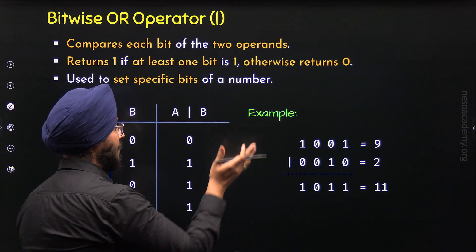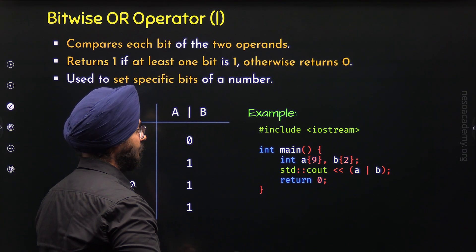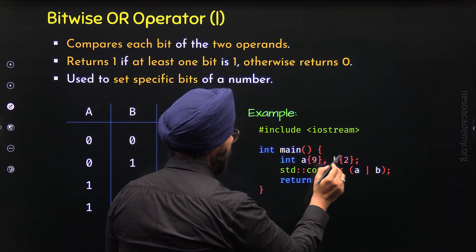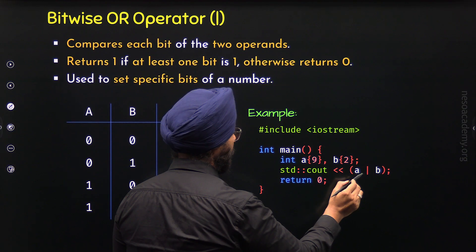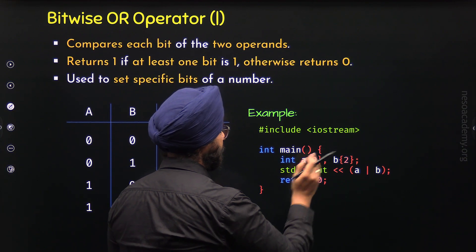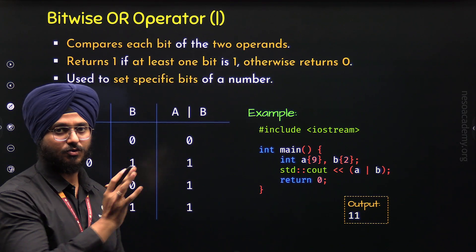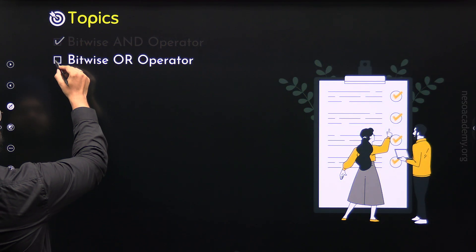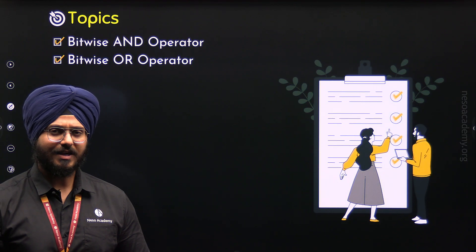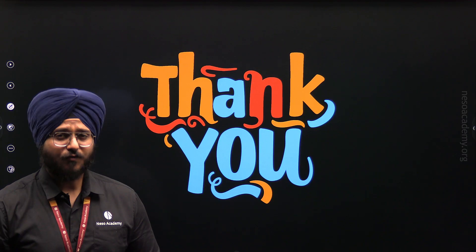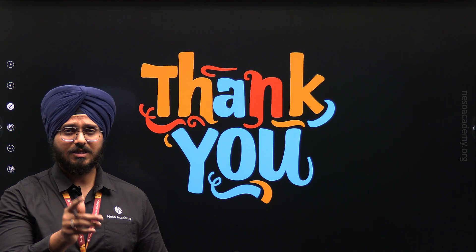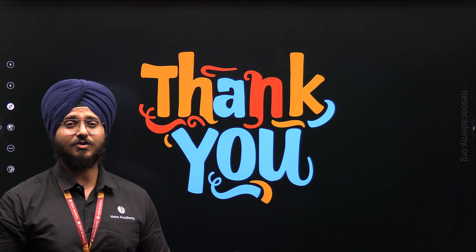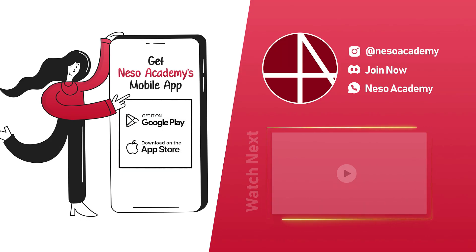Now we can implement this through a C++ program. Here the values of A and B are 9 and 2, and I am performing the Bitwise OR operation on these two values. We know we will get 11 as the result. With this, we have understood the Bitwise OR operator and are done with the second topic, which means we are done with this lecture. Thank you for watching. I will see you in the next lecture where we will discuss some more bitwise operators.